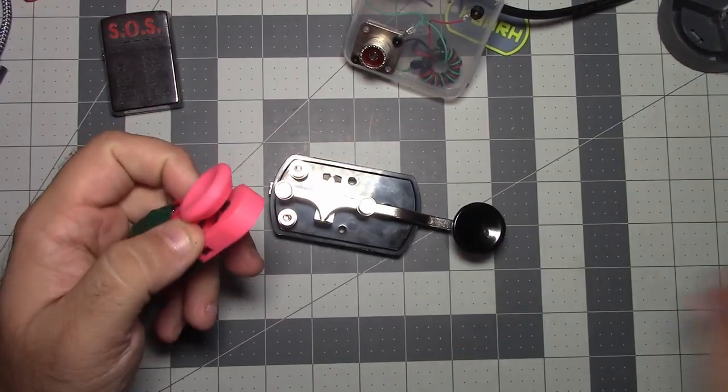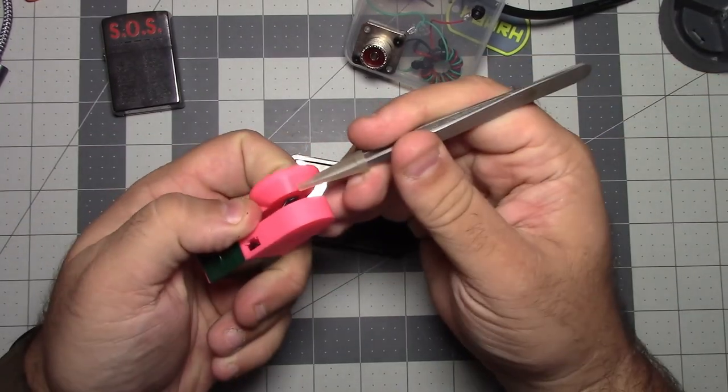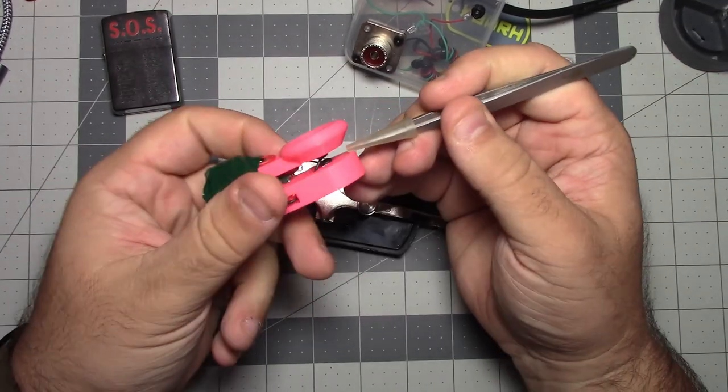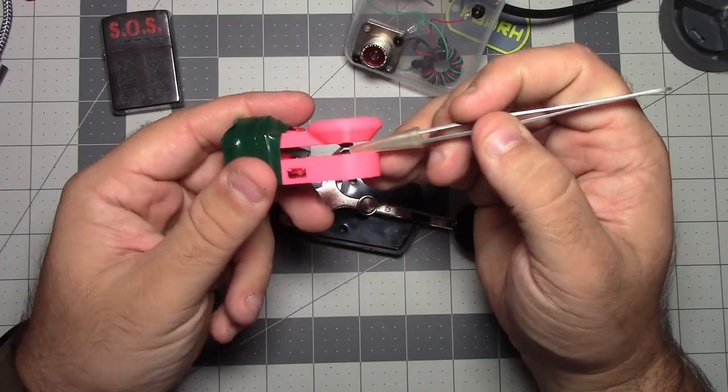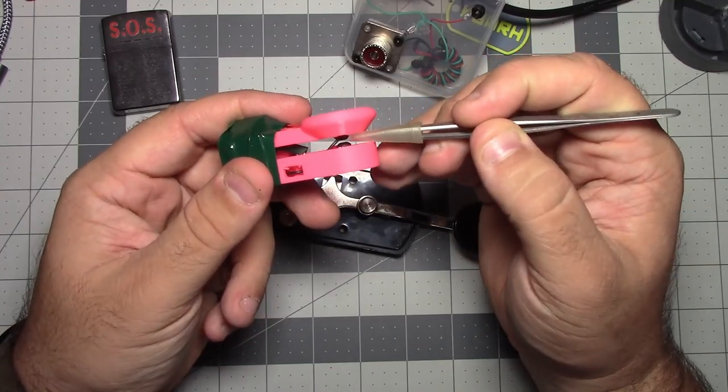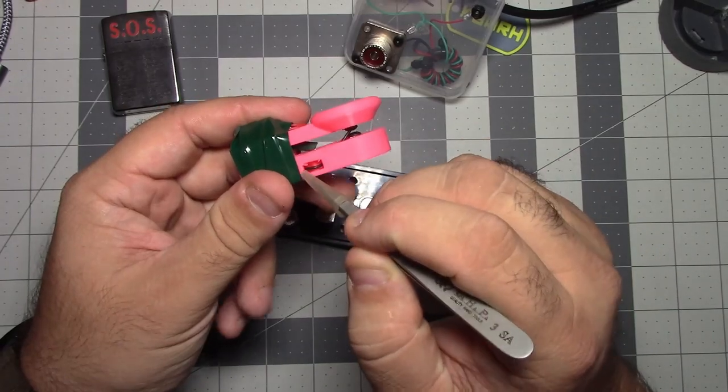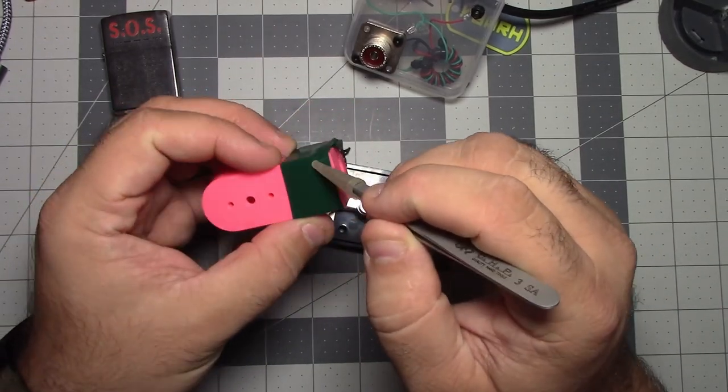So I got my M3 screws to fit in the hinge back here. I got my M3 screws to fit in the holes in the top and the bottom, and then I just used some 30 gauge hookup wire.